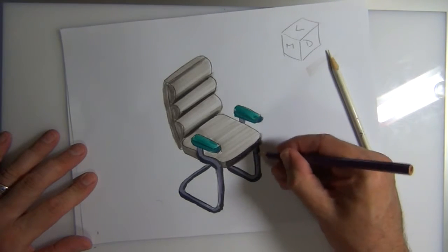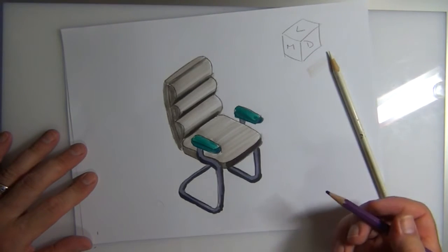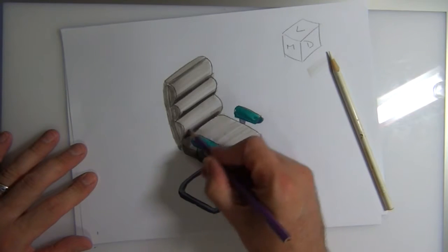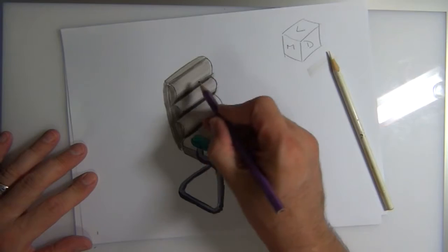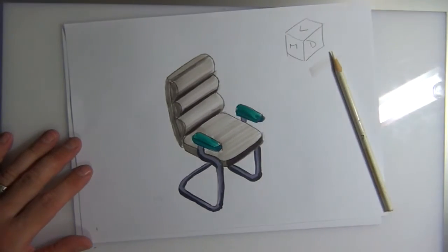And blend a little bit on the outsides here, possibly a little bit as it comes through under here, add a bit of shade to it.